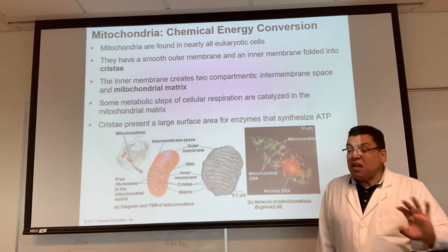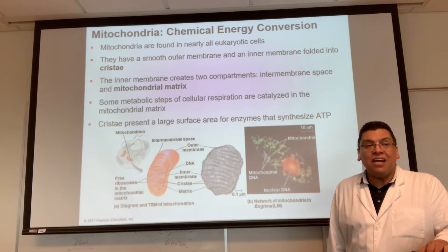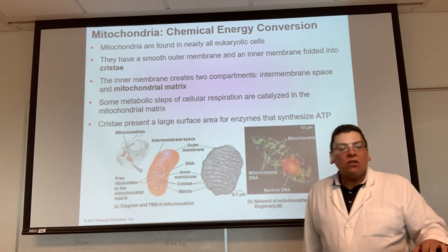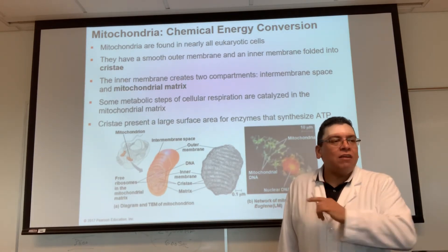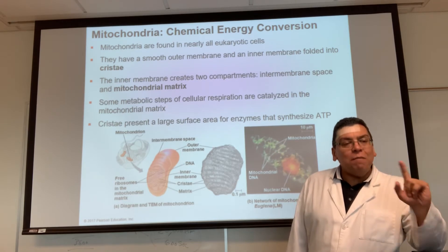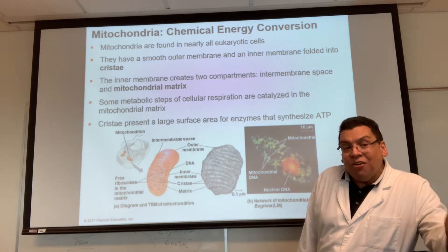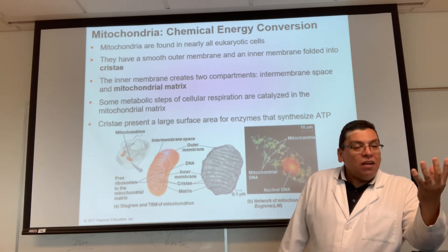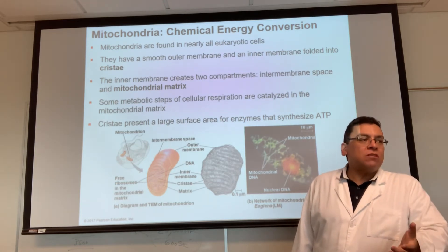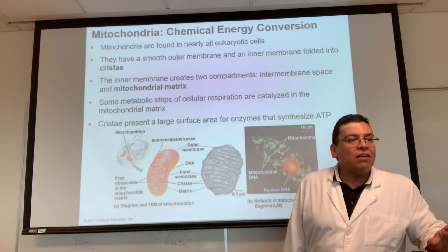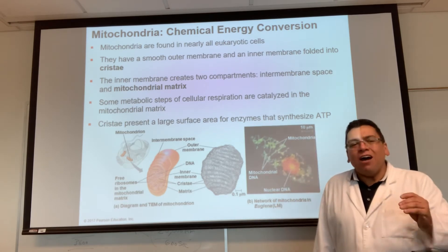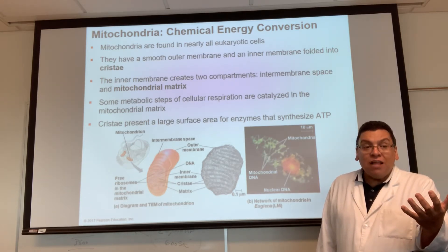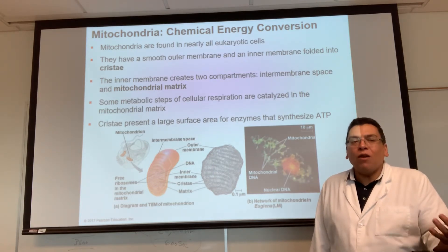The ribosomes inside the mitochondria do the same job — protein synthesis — but they have a size of 70S. So with respect to size, they're not the same ribosomes. Now where did they come from? The mitochondria used to be bacteria. When I look at the ribosomes in bacteria, their size is 70S. That's one fact that supports endosymbiosis — how do you explain that your mitochondria has ribosomes exactly the same size as bacteria?